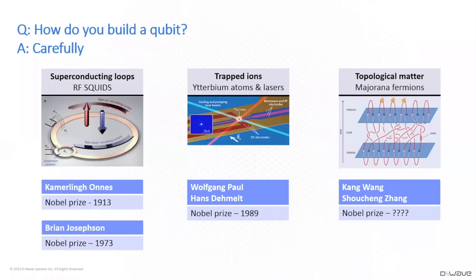You can also trap an ion — this is what IonQ is doing on the east coast of the U.S. Microsoft is pursuing a fairly exotic approach called topological matter, where they actually try to represent the states of a qubit using the braiding patterns of particles as they move through space and time. So the bottom line is there are lots of ways that you can build a qubit, and it's in a sense an engineering choice.